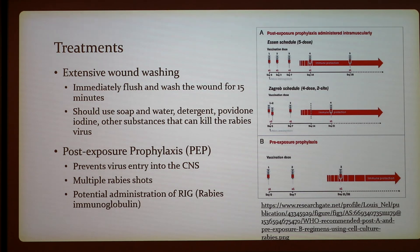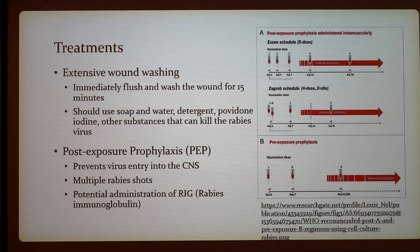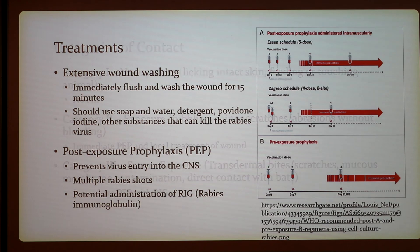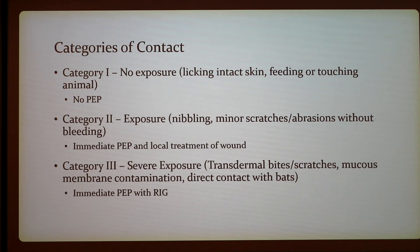Treatments begin with extensive wound washing — immediately flush and wash the wound for 15 minutes using running water, detergent, povidone-iodine, or other substances capable of killing the rabies virus. Post-exposure prophylaxis (PEP) should still be pursued, as it prevents virus entry into the central nervous system. It includes multiple rabies shots, and depending on the stage, rabies immunoglobulin (RIG) may also be administered.